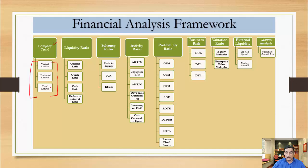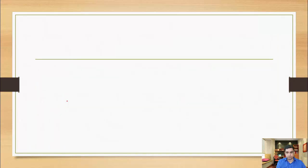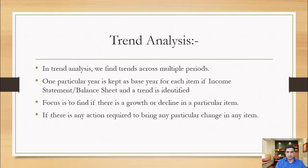We calculate the growth rate of each item of the income statement and the growth rate of each item of the balance sheet. In trend analysis, we also look at growth rate over a period of time, but the growth rate is not calculated based on the immediately previous year as in horizontal analysis. In trend analysis, the growth rate is calculated on a particular base year.